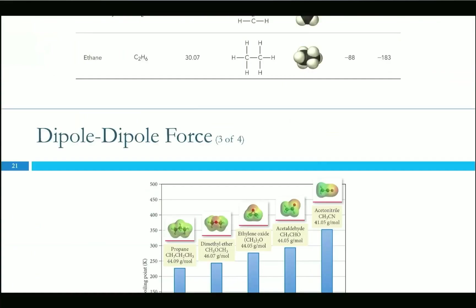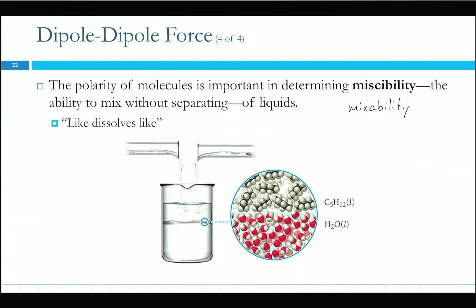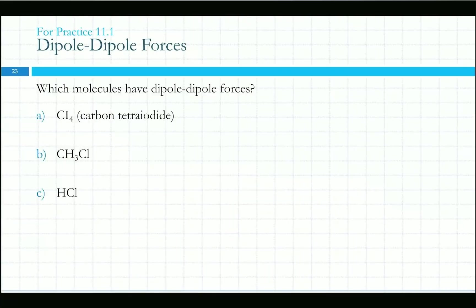Geckos and lizards use dispersion forces to stick to ceilings and walls. They don't have a sticky substance on their feet — they just have an incredibly high surface area, making a lot of contact, which allows dispersion forces to hold them to the wall.